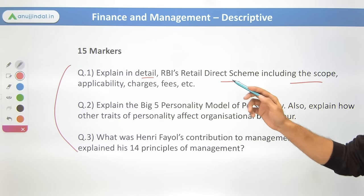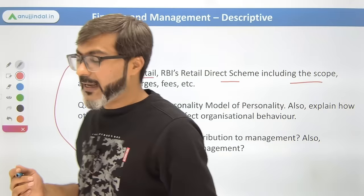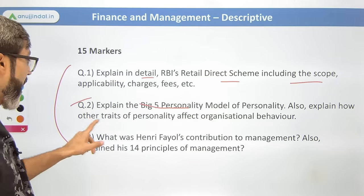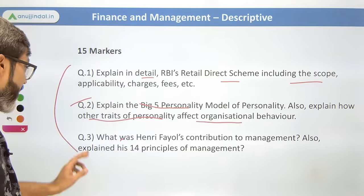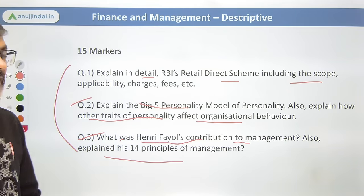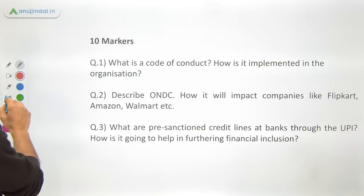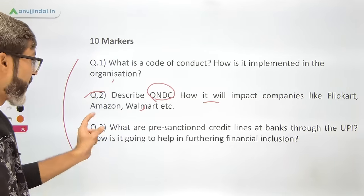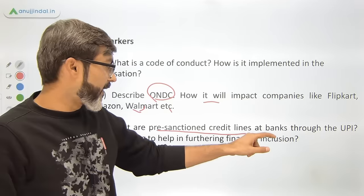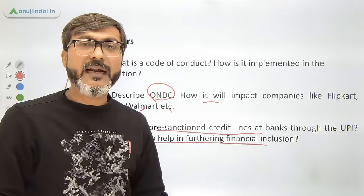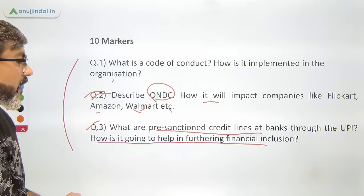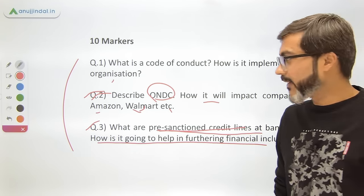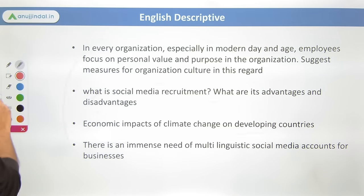FM descriptive for 2023 was quite doable. Topics included: RBI's Retail Direct Scheme — scope, applicability, charges, and fees; the Big Five personality model and how personality traits affect organizational behavior; Henry Fayol's contribution to management and his 14 principles; code of conduct and its implementation in organizations; ONDC — Open Network for Digital Commerce — and its impact on companies like Flipkart, Amazon, and Walmart; and pre-sanctioned credit limits at banks through UPI and their role in furthering financial inclusion.